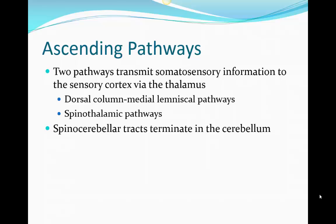So in review, the ascending pathways are transmitting information from the skin and muscle spindle receptors about body position, sending that information up to the thalamus and then on to the somatosensory cortex. The spinocerebellar tracts don't go to the thalamus — they stop at the level of the cerebellum, where we see the unconscious awareness of body position. So the conscious body position is through the spinothalamic and dorsal pathways, and the spinocerebellar is the unconscious body position.